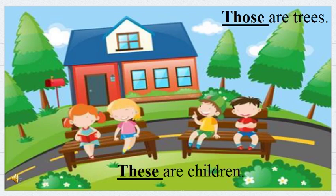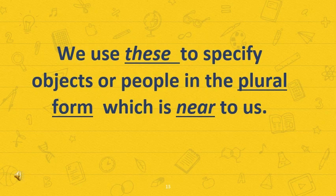And if you can look at the back of the trees, those are the trees — which are really far from the children. These are the nearest and those are the far. We use 'these' to specify objects or people in the plural form that is near to us. That means 'these' is used for the plural form, and make sure that it has to be near. When the objects are plural and near to us, then we are going to use 'these'.